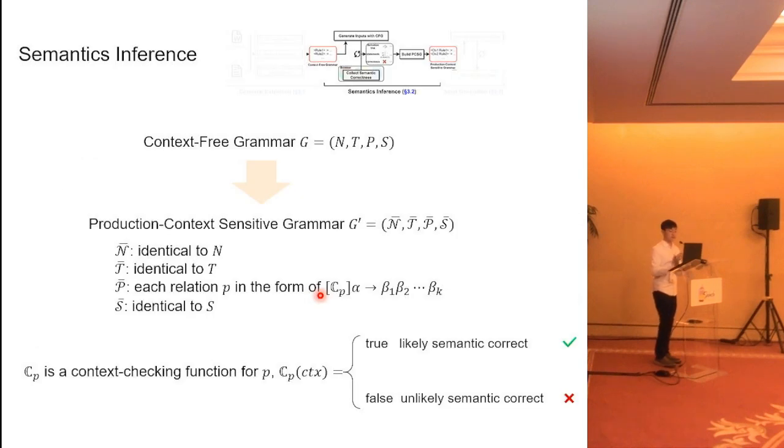The second step is the semantic inference, where we want to turn the extracted CFG into a production-context-sensitive grammar, which I shorten as PCSG. We define the PCSG in a very similar way with the CFG, except that we append a context-checking function for each production rule.